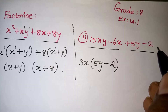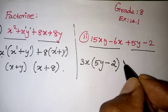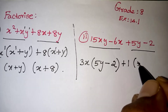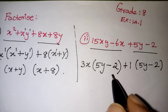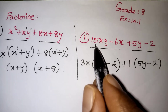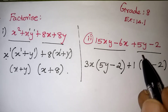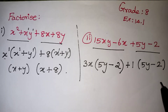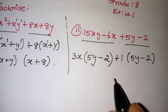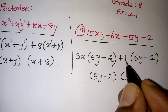For the second pair, 5 and 2 have no common factor except 1, and there is no common y either, so we take 1 as common. With 1 outside, the bracket remains as (5y − 2). Now (5y − 2) appears in both groups, so we take (5y − 2) outside. The remaining terms are 3x and +1, giving the final answer (5y − 2)(3x + 1).